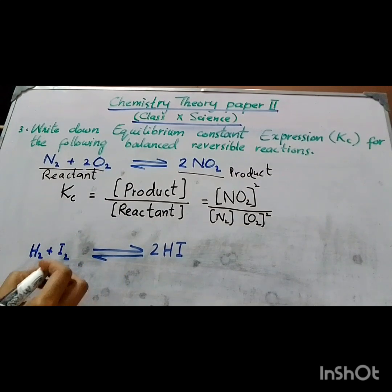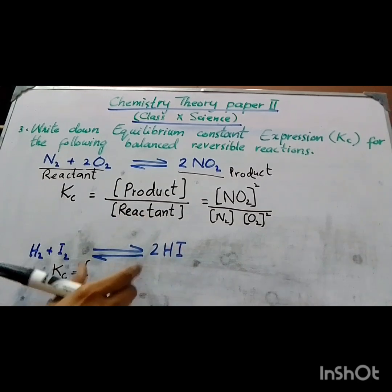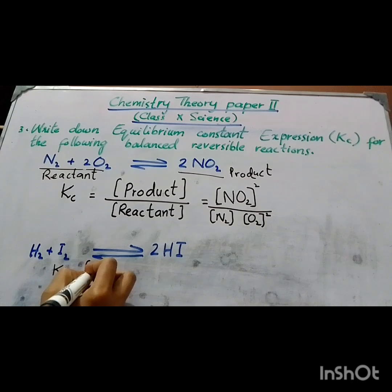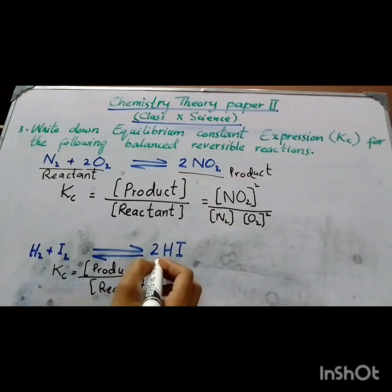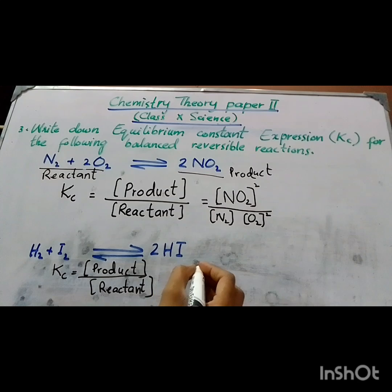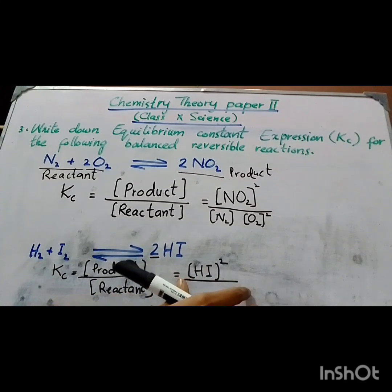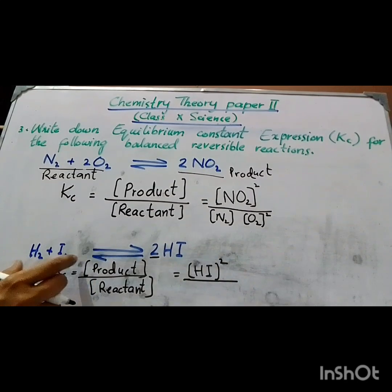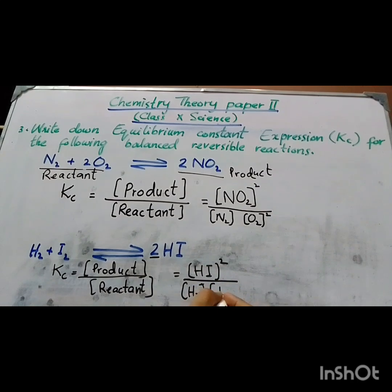We have another reaction: hydrogen and iodine. Kc = concentration of products divided by concentration of reactants. The product is 2HI (hydrogen iodide), so we write [HI]² in the numerator — the coefficient 2 is written as a power. The reactants are hydrogen (H₂) and iodine (I₂), written in the denominator.